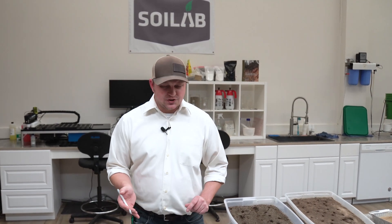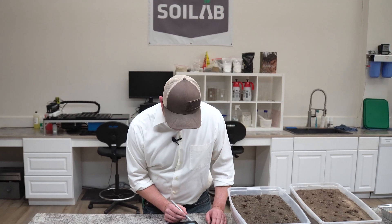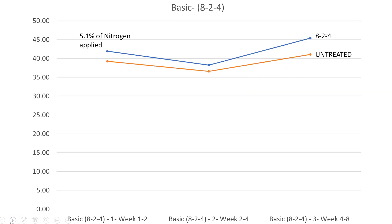Was it any different in the basic soil? We saw a little bit of a difference — a little bit of a belly in the middle. In the basic soil with the 6-4-0 fertilizer, we saw a pretty flat curve of release between weeks two and four, with enhanced release moving through week eight. That trend continued with our 7-1-2 fertilizer, where about 3% of that nitrogen was made available early at week two, with more being made available at weeks four and then at week eight. The 8-2-4 fertilizer trended almost identical, with 5% of applied nitrogen at week two and the rest being released through time.